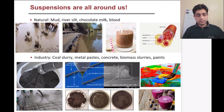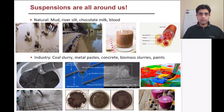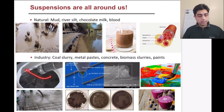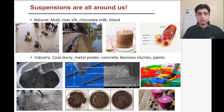Suspensions are everywhere around us in nature — mud and blood are types of suspensions. It is also a very important material that needs handling and transport in industry, so coal slurry, metal pastes, smoothies, and biomass slurry are all suspensions — particles suspended in a fluid medium. As a result, it becomes important to be able to predict the rheological properties of these materials under different flow conditions.